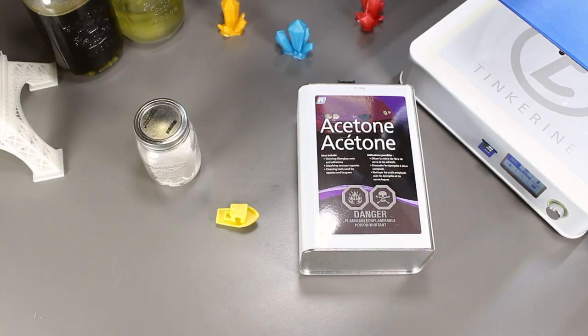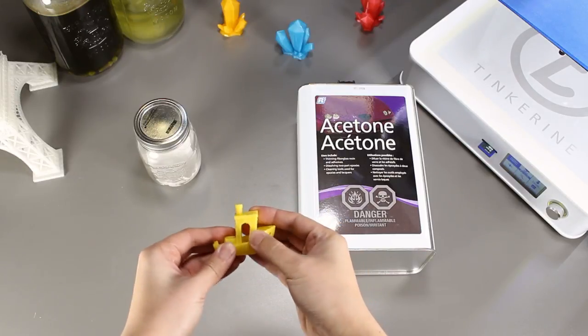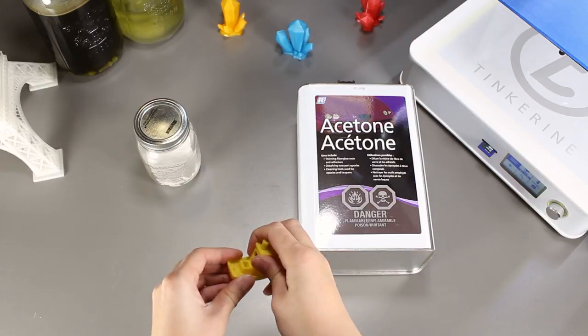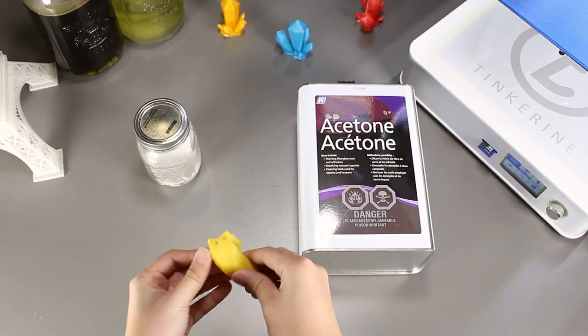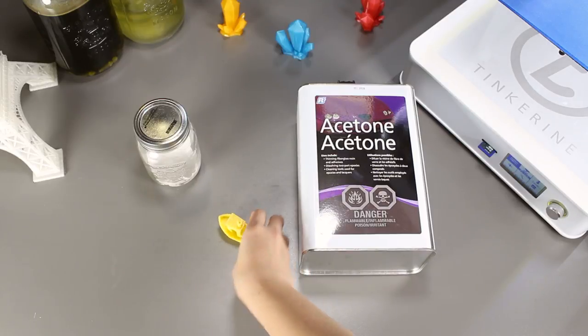Well there we have it. We tried vapor smoothing with acetone and it doesn't work. It does soften the PLA and give it a rubbery characteristic but most importantly the lines are still there. Once the acetone evaporates, the print does start to harden again though.